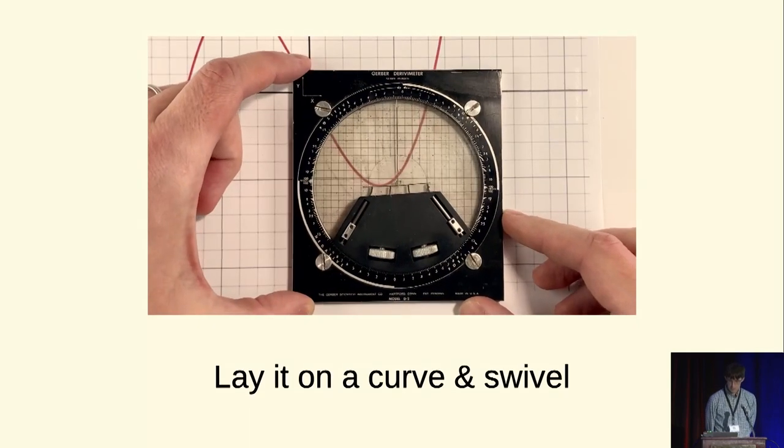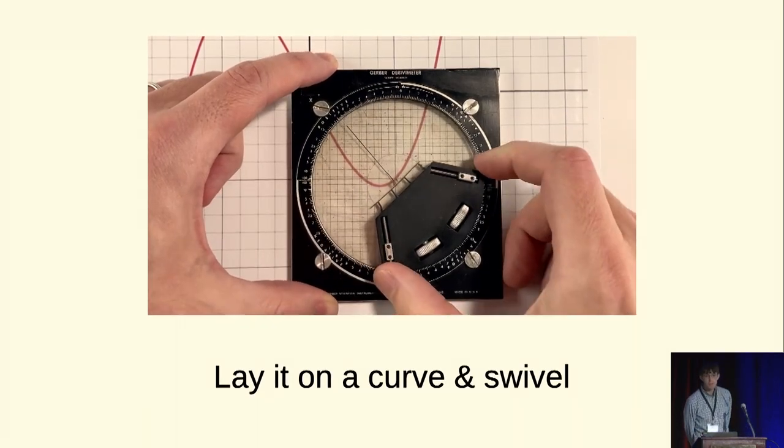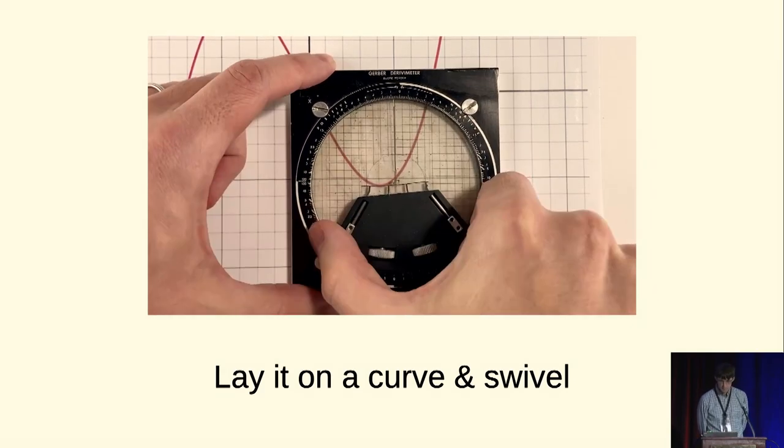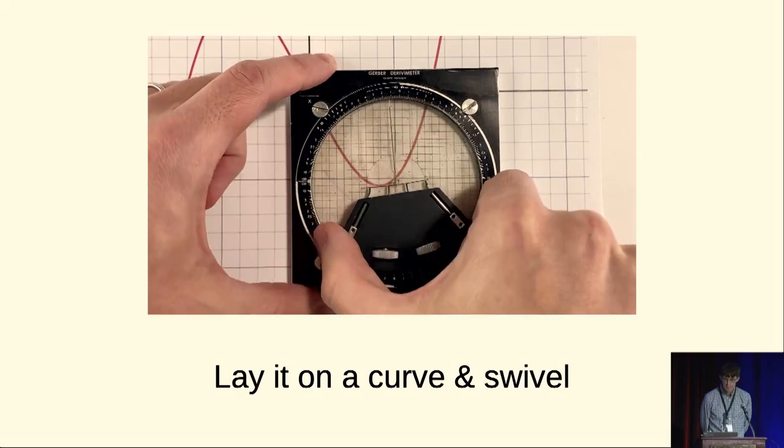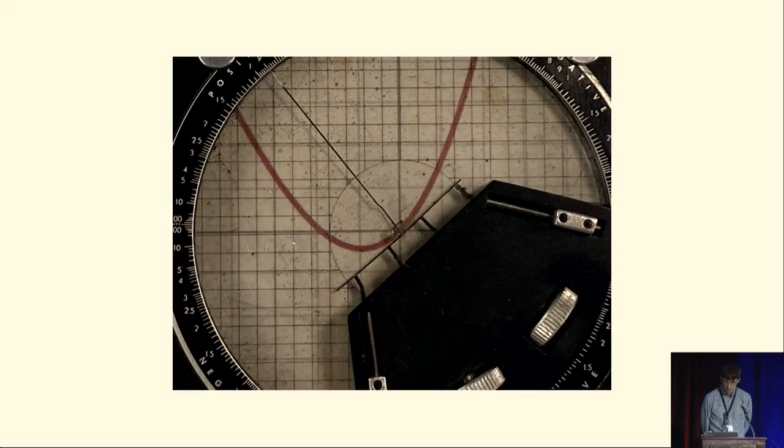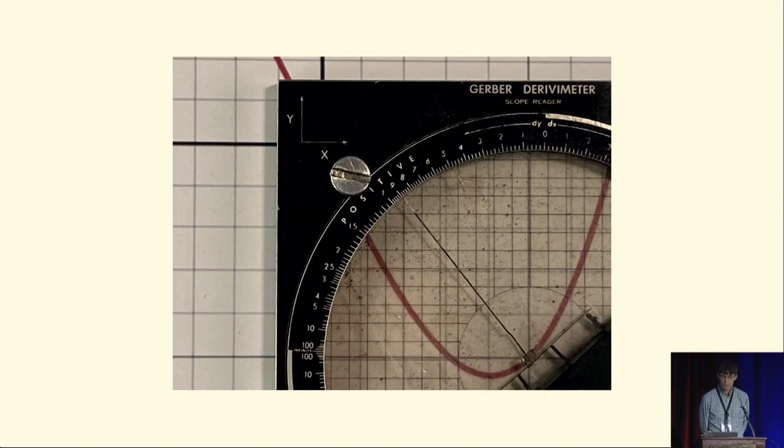The way you use it is you lay it down on top of a curve on paper. You swivel that little thing there and line up sort of a crossbar with the tangent, right? You line the crossbar up as the tangent to the curve and then it has a little pointer sticking out which points on a scale and that tells you the slope of the curve at that point.